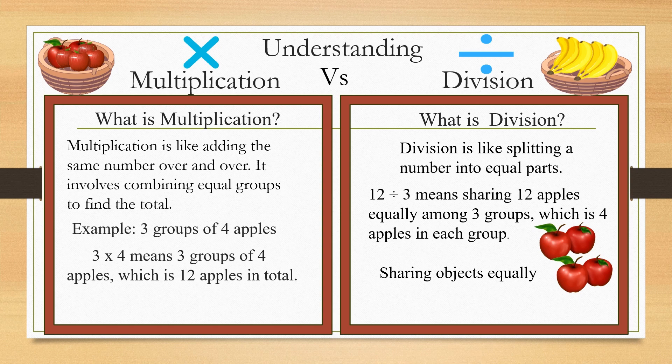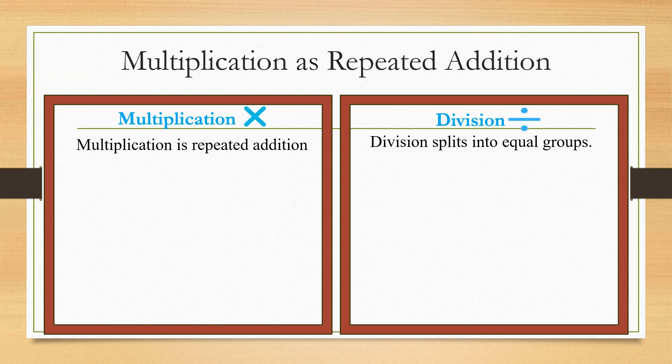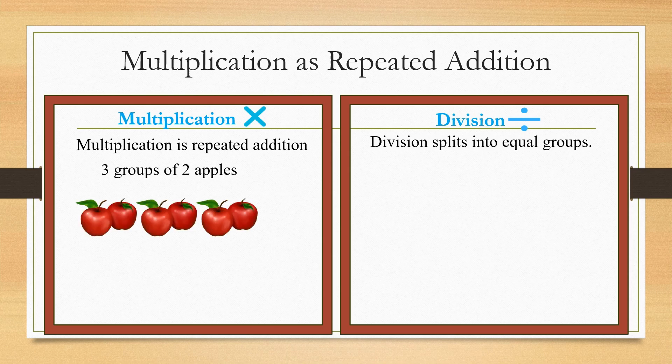Multiplication is repeated addition. Consider three groups of two apples. The total is two plus two plus two, which equals six. If you write it as a multiplication sentence, it is three times two which equals six.